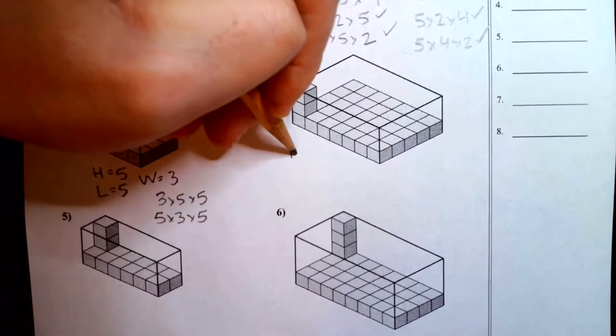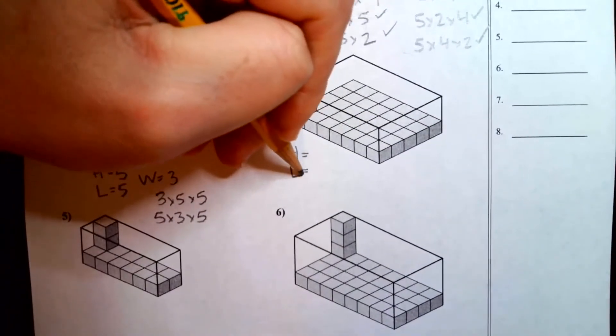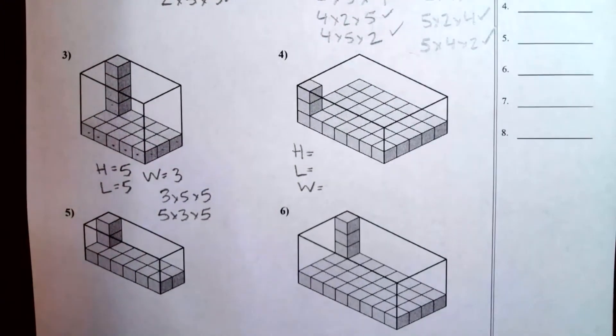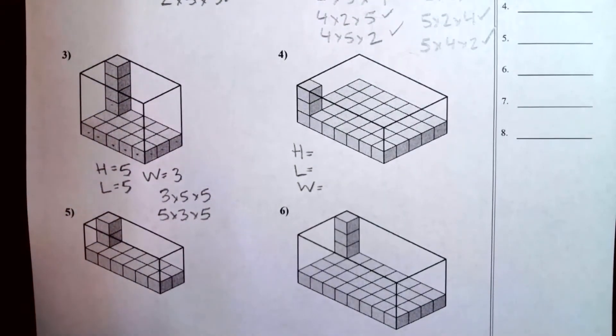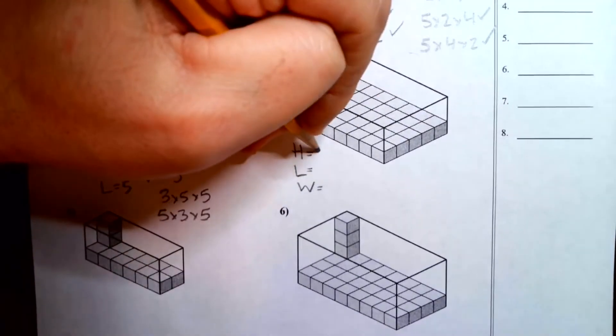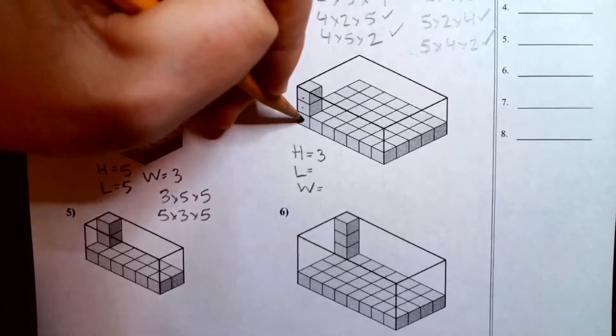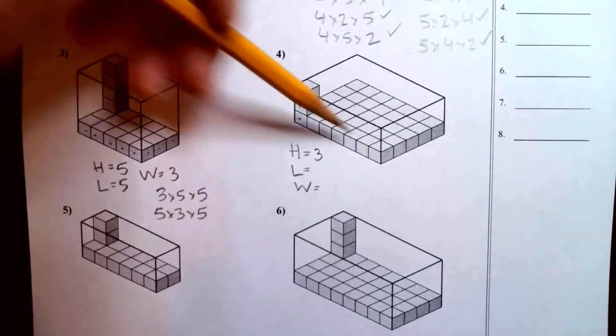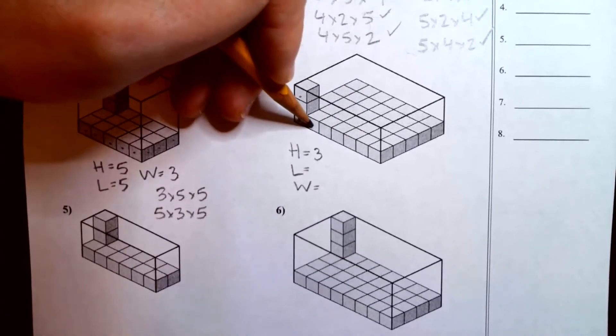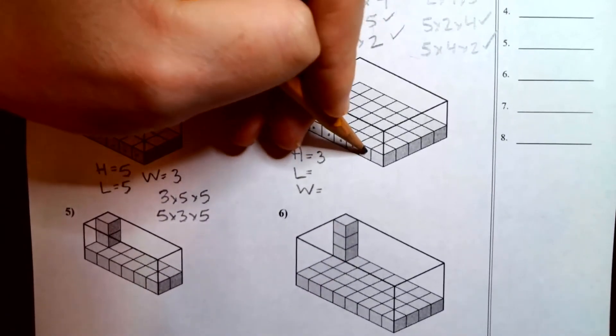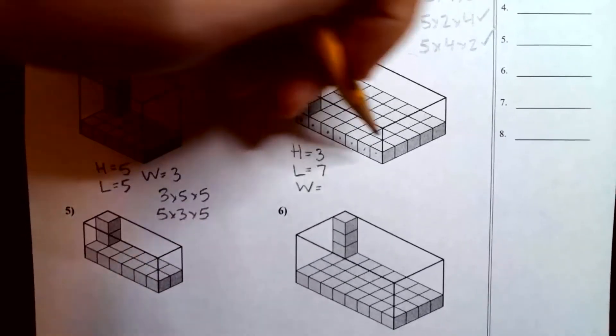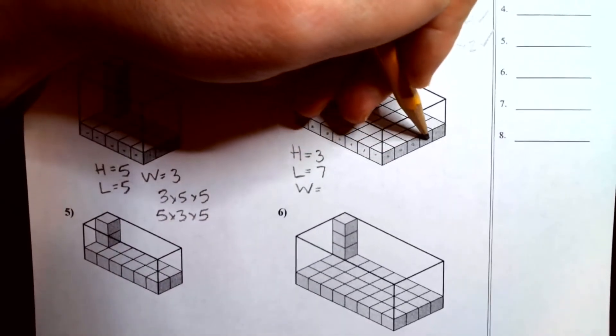Let's do number four. Height, length, width. So go ahead and tell me the height. And tell me the length. And finally, tell me the width. And so the height is going to be three. Right? One, two, three. Our length would be this side. This is the longest side. And if we count, one, two, three, four, five, six, seven. And the width would be one, two, three, four, five.